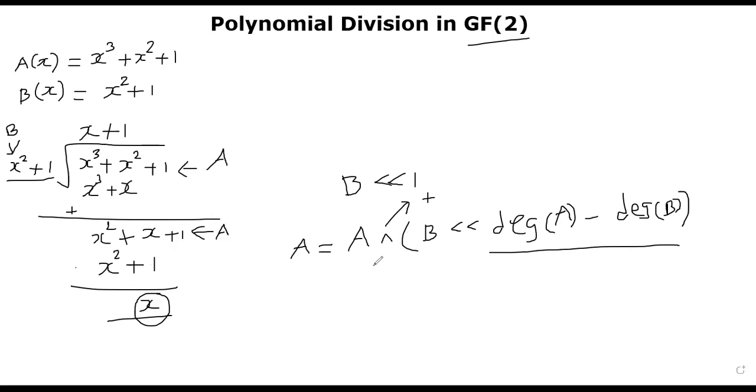So the things that are same will cancel out. So x³ and x³ will automatically cancel out. This part, x³ + x is coming from here. Original B left shift by one position will give you x³ + x. And once you add with your original A, you get a new A, which is x² + x + 1. Now you repeat the same process again.